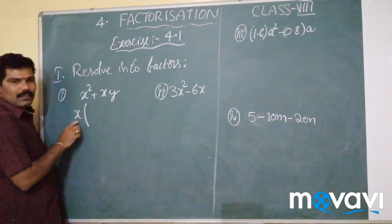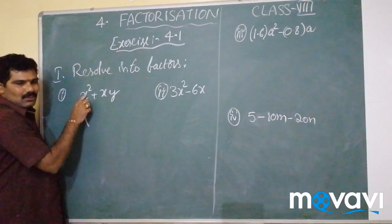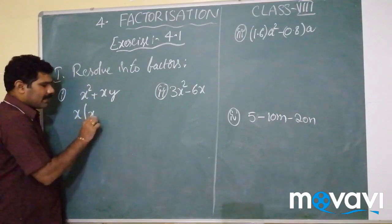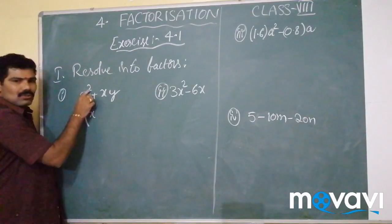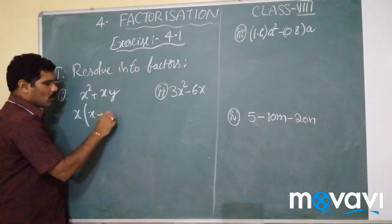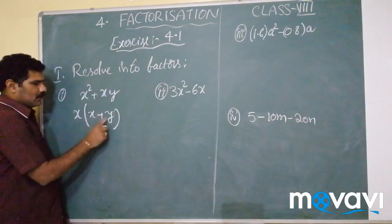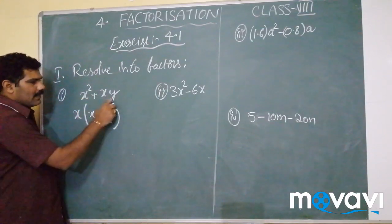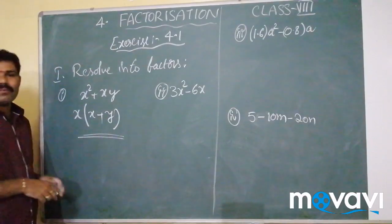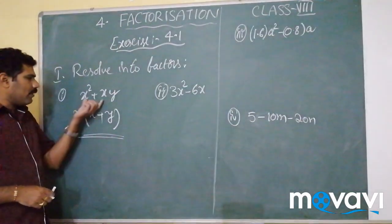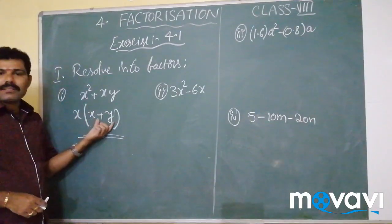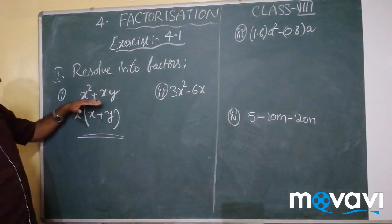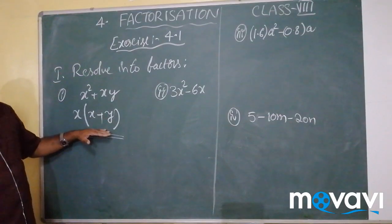If I write x outside as a common factor: x² can be written as x into x, so x outside, remaining is x; and x into y gives xy. Therefore x(x + y) — here x and (x + y) are the factors of x² + xy, and this is the factorization.